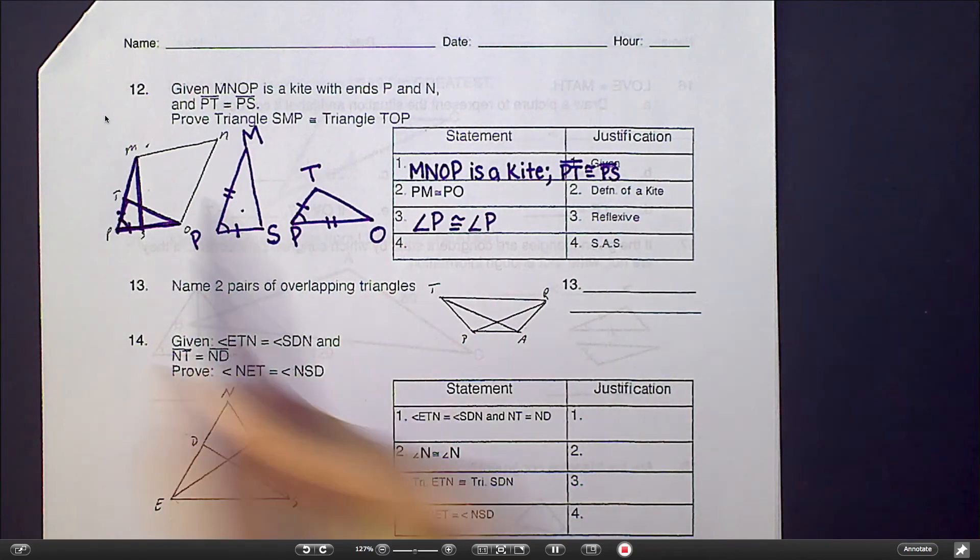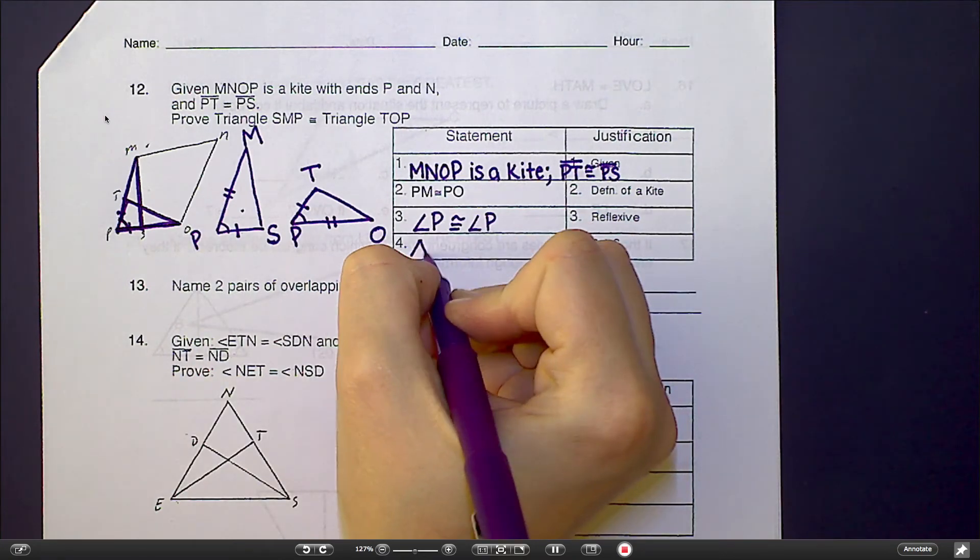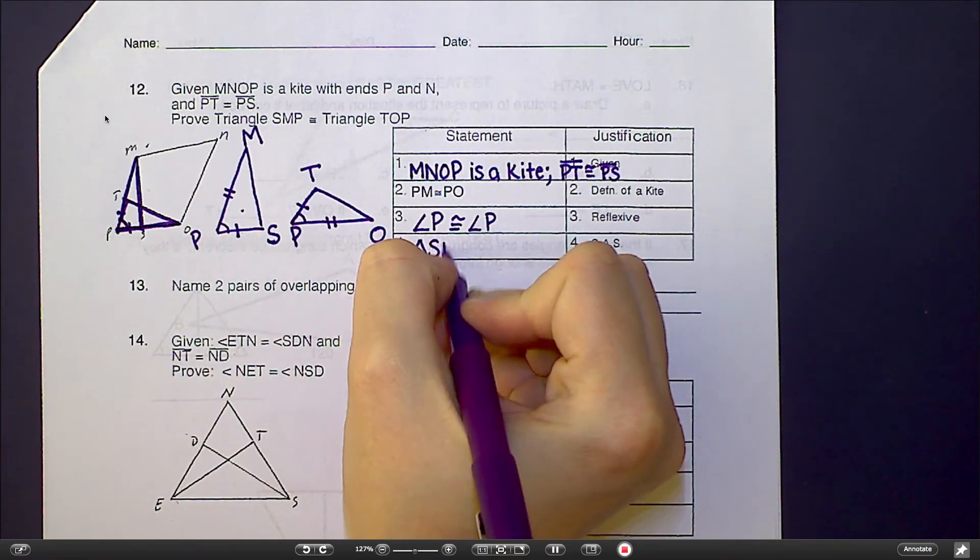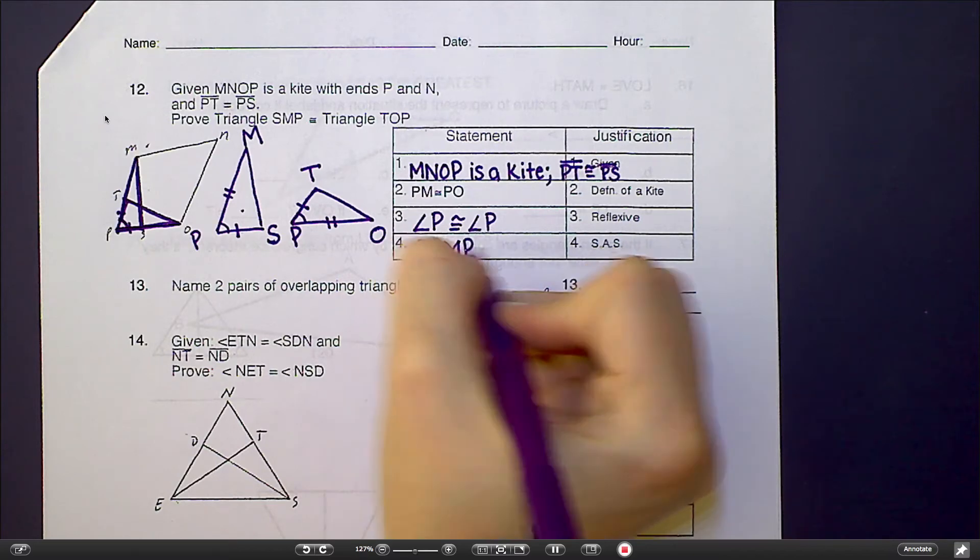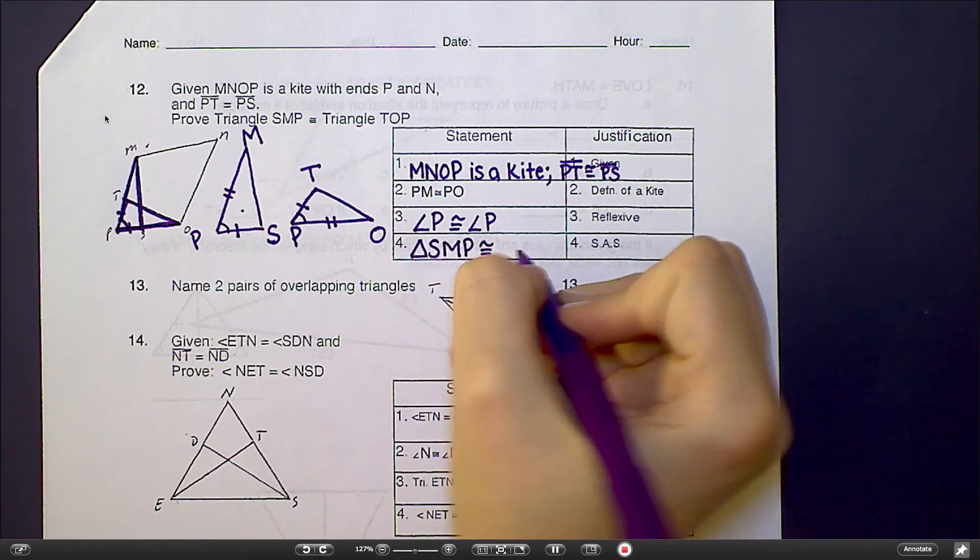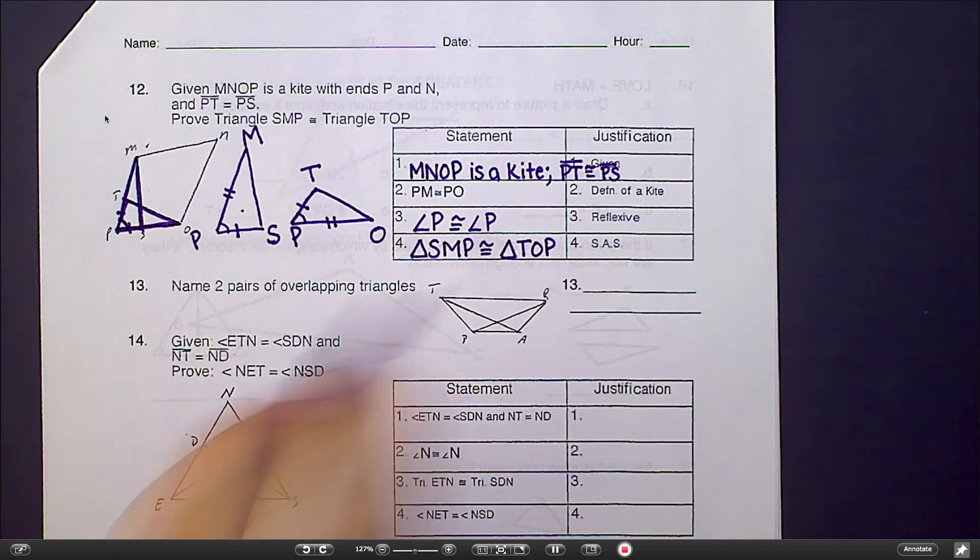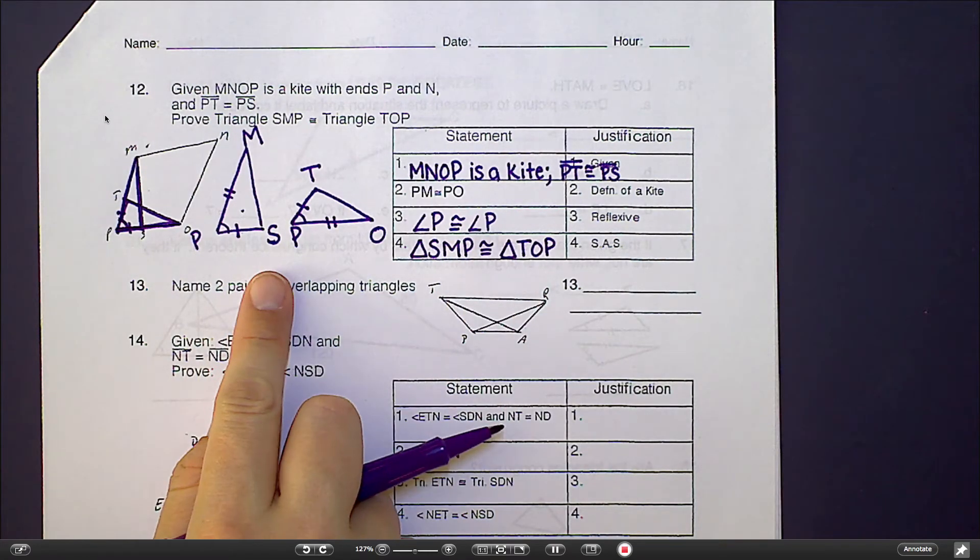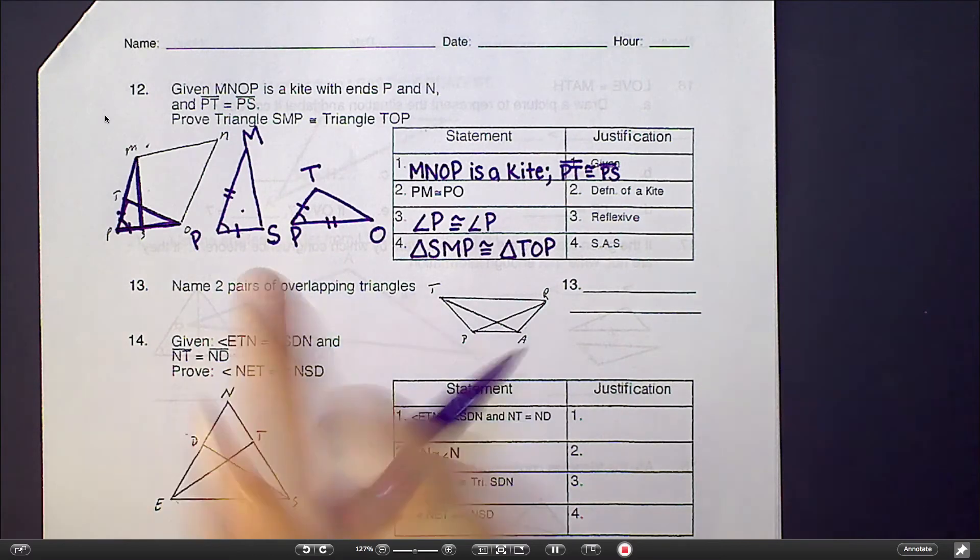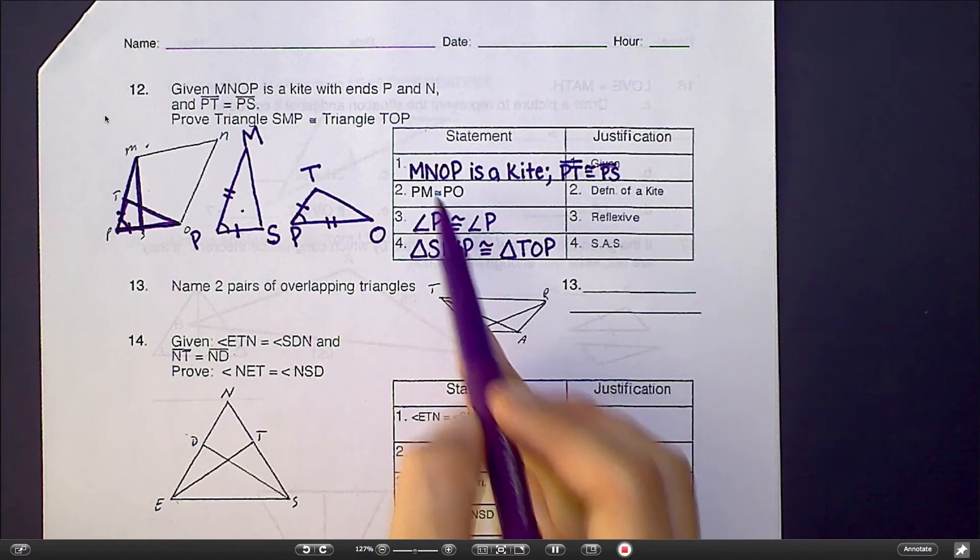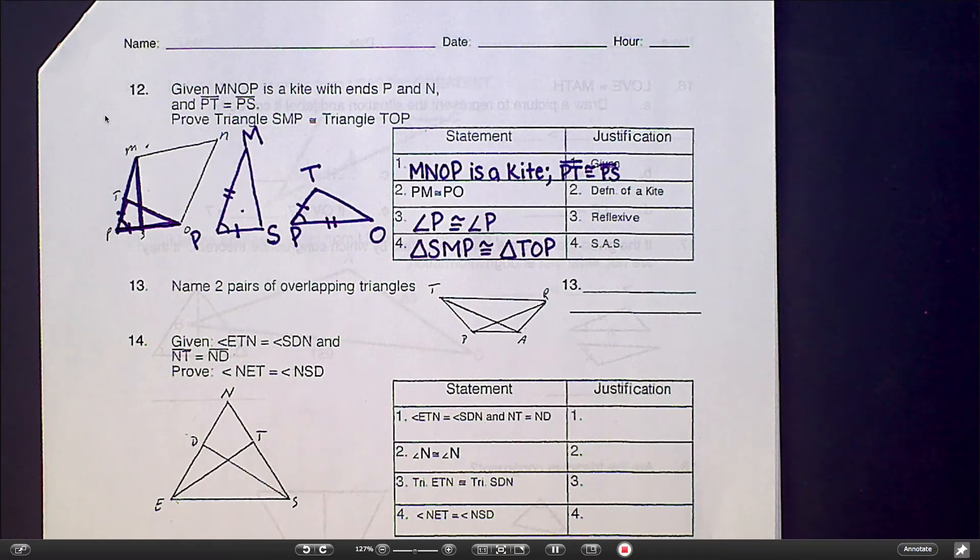And then we can say our very last step, that the triangles are now congruent. Triangle SMP is congruent to triangle TOP because of SAS. And hopefully you can now see that in your picture. There's a side, a side, and an angle in between.